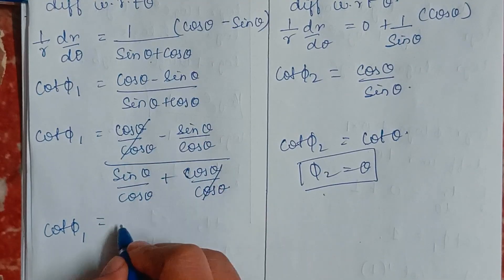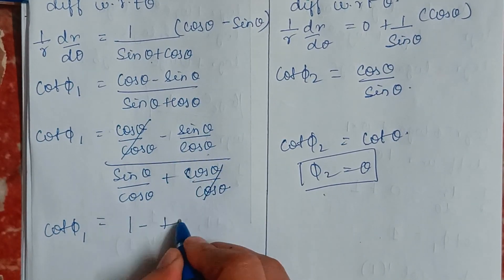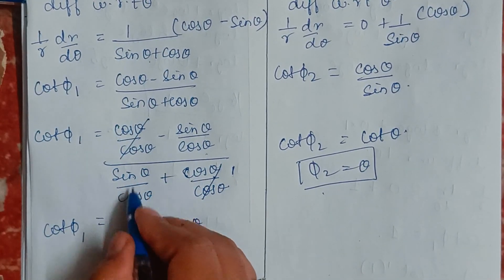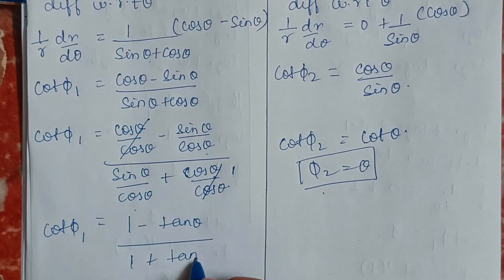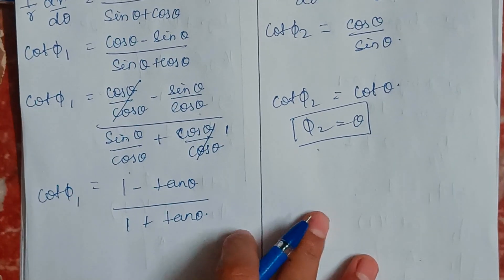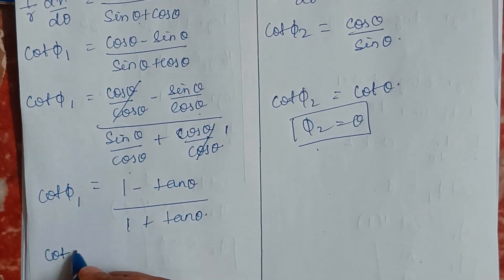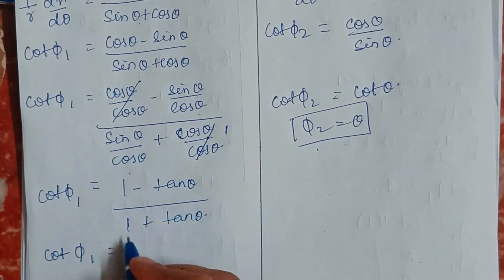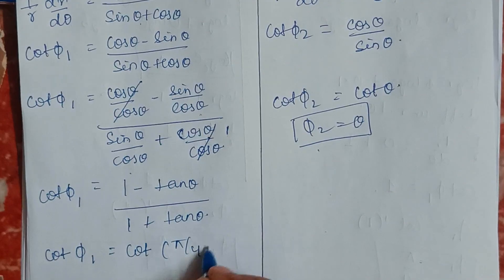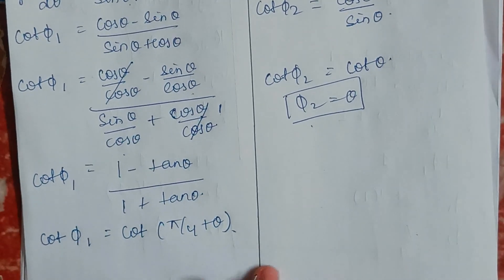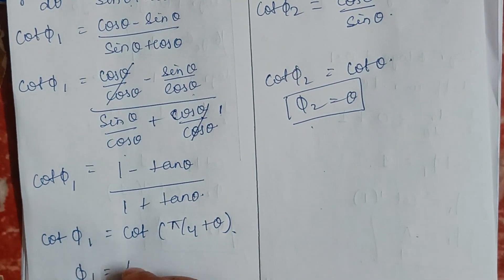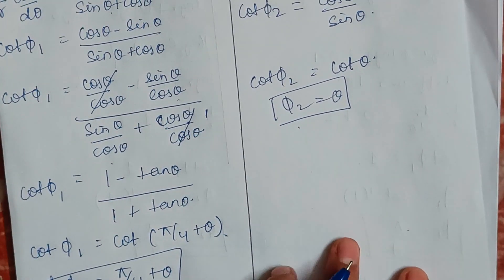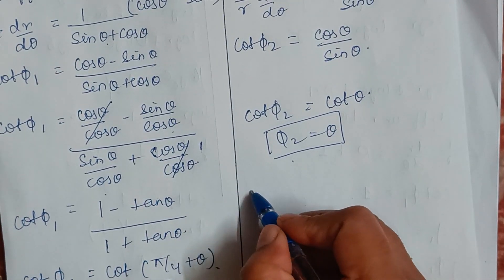This simplifies to (1 − tanθ)/(1 + tanθ), which equals cot(π/4 + θ). Therefore φ₁ = π/4 + θ. And since cot φ₂ = cosθ/sinθ = cotθ, we have φ₂ = θ.